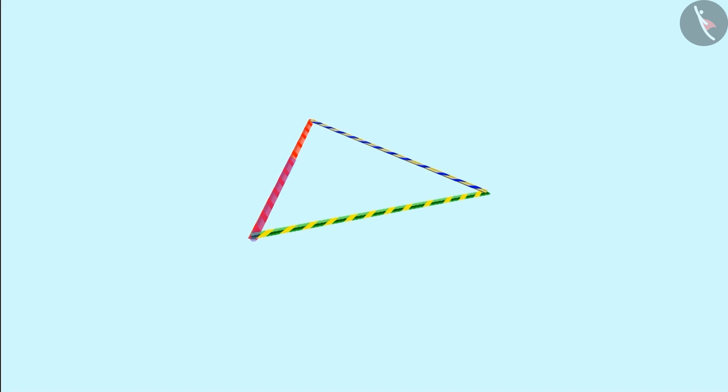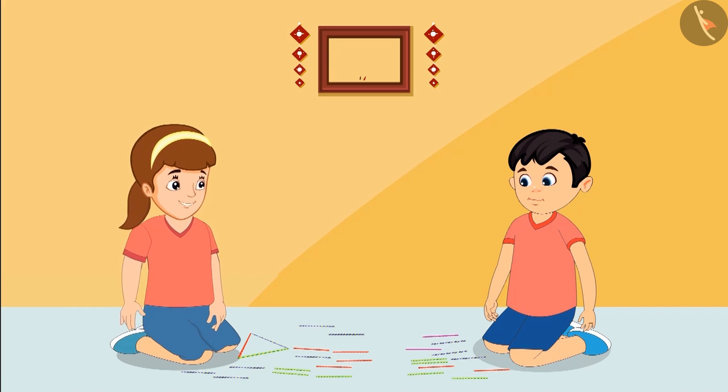Neha, this shape is made of three straws. Yes. It means it is a triangle. Is it so? Yes, Chotu. You are right.